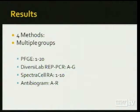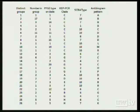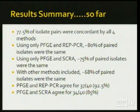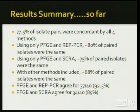Our results showed a diverse set of groups — over 26 distinct groups depending on how classified by each method. Almost 77.5% of isolate pairs were concordant by all four methods, similar to what was found in bloodstream data. Using pulse field and REP-PCR only, 80% of pairs were the same. Comparing just pulse field and Raman analysis, 75% of pairs were the same. With all methods combined, only 68% of paired isolates were the same — suggesting pulse field and REP-PCR had slightly stronger agreement than SpectraCell.